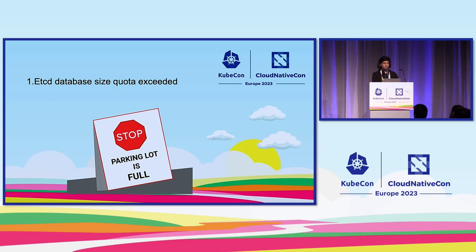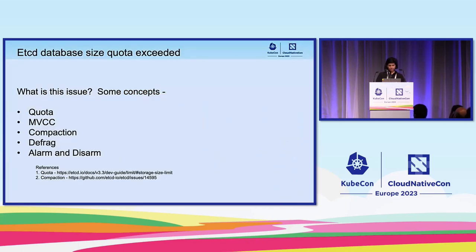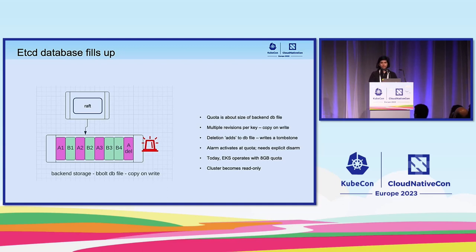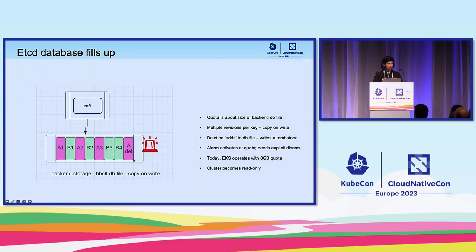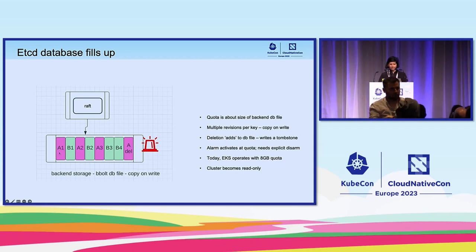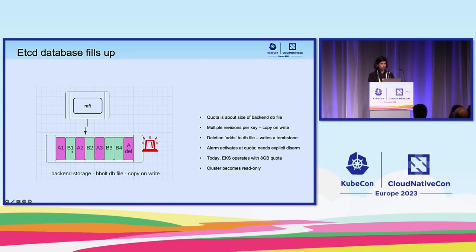The first issue is database size quota exceeded. Before getting to the production issue, let's recap a few concepts. This is a simplified view of etcd layers — we have Raft for consensus, and then we have the backend storage, which is BoltDB, a big memory-mapped file. The concept of quota applies to the backend. In this toy example, key A (shown in pink) and key B (shown in green) have filled up the file.